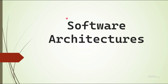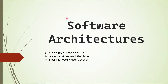In this video we are going to see 4 different types of architecture mostly used in the software industry. The first one is monolithic architecture, followed by microservices architecture. After that we are going to cover event-driven architecture, and then service-oriented architecture, commonly known as SOA.